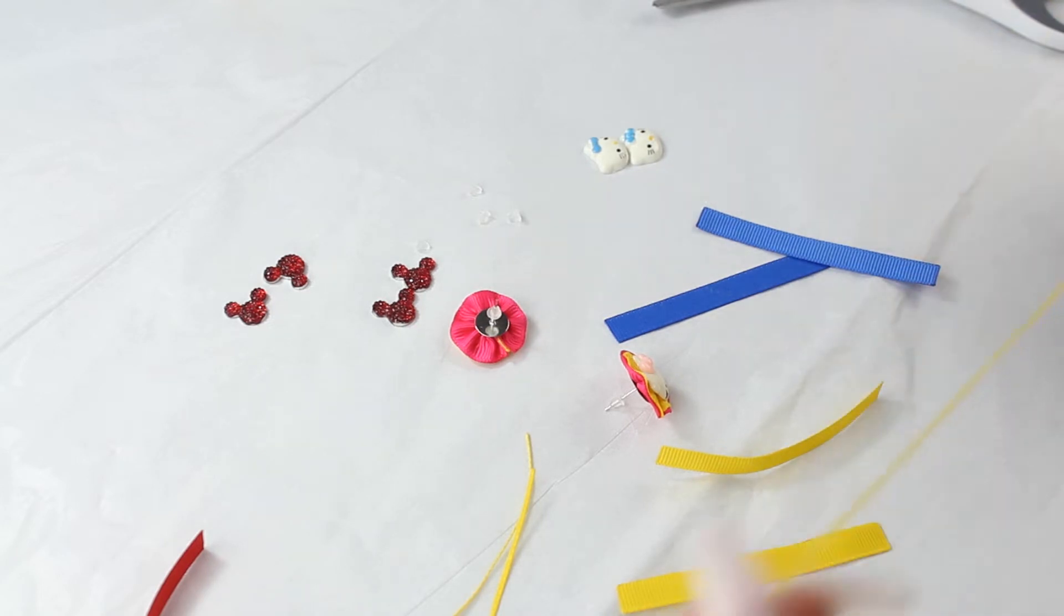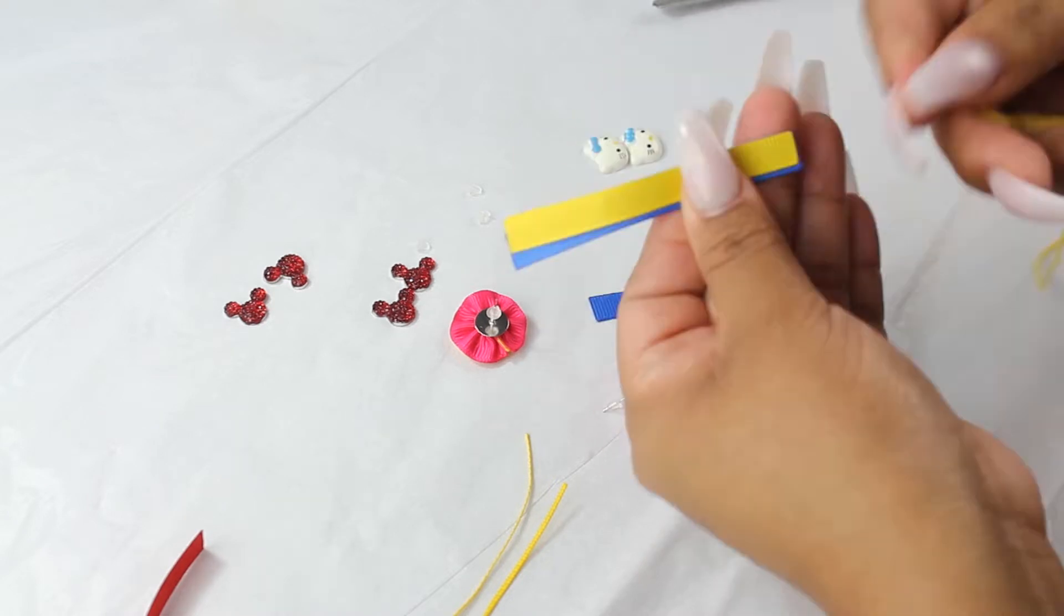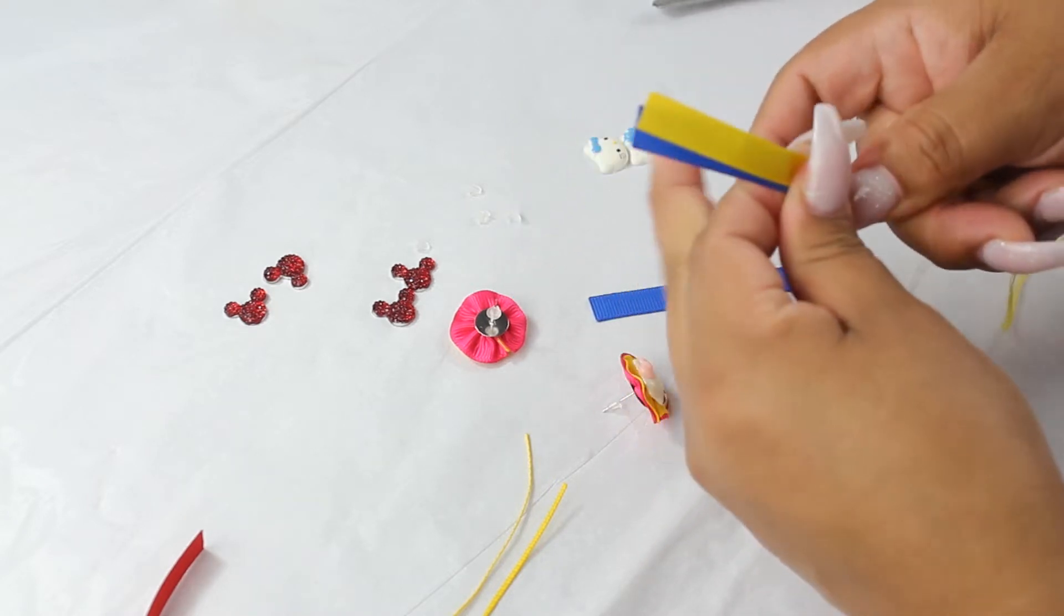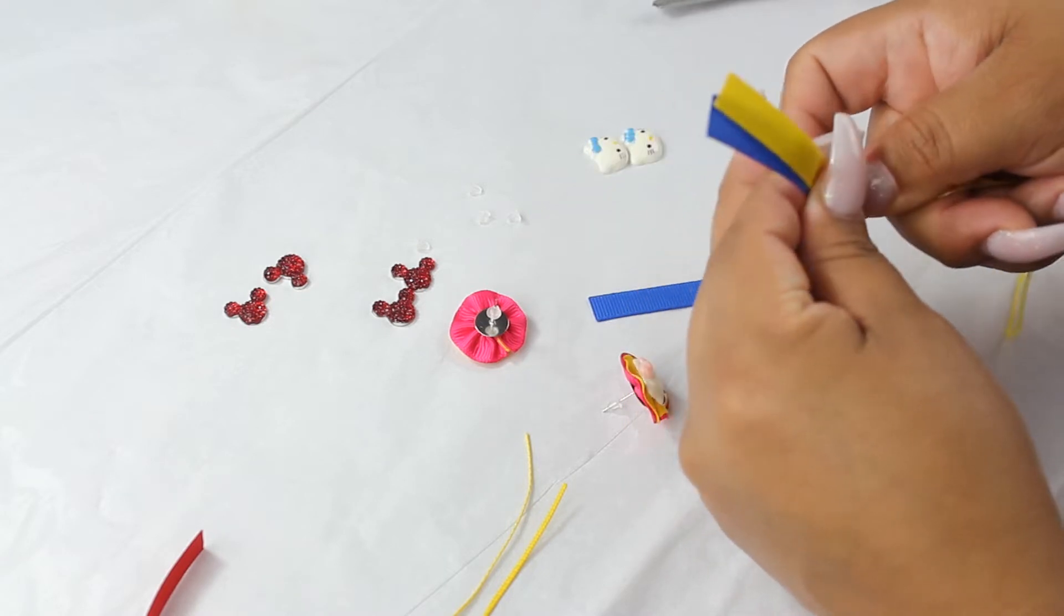A lot of ladies love to match their bows to the earrings for their little girls. Now you go ahead and layer them and you just start sewing from here, from the right on the edge.